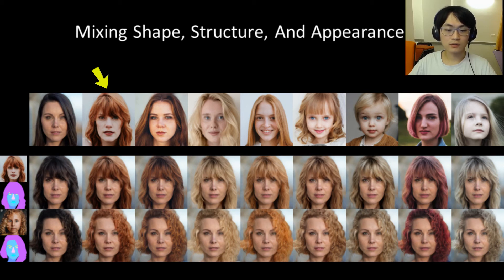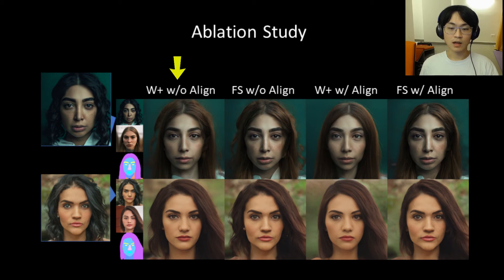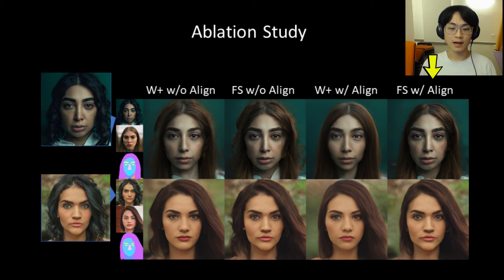All images on this slide use the same face — only the hair is modified. By mixing the shape and structure captured by the F code and the appearance code, we can use different reference images for each attribute. This hair style gallery shows different hairstyles applied to a person by varying the hair structure and appearance. In the qualitative ablation study: using only the W-plus code with no alignment step yields results that are neither realistic nor specific. Using the FS code improves reconstruction of individual appearance but lacking alignment causes blending artifacts. Using only the W-plus code with alignment gives very realistic but not specific results. Using FS with alignment gives realistic results that still look like the original person.